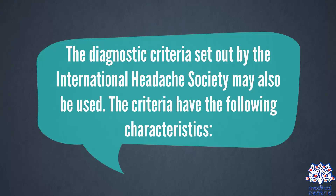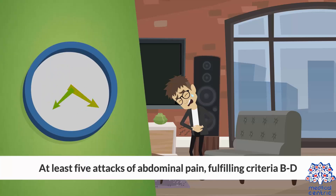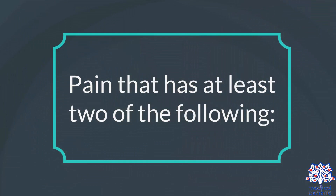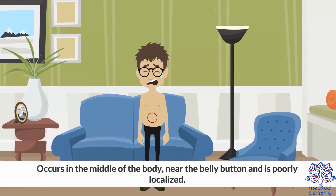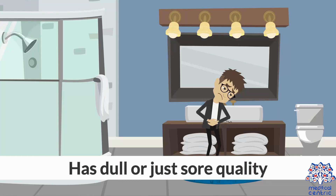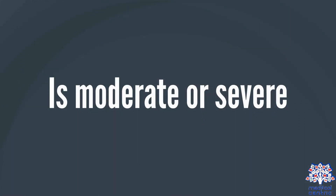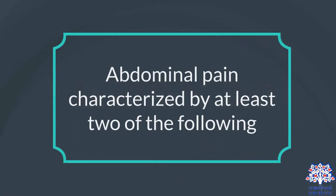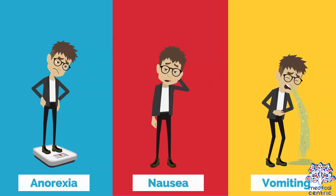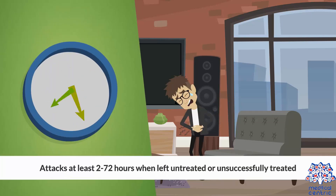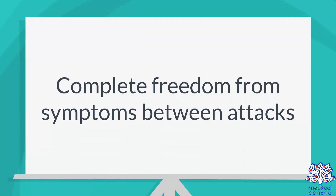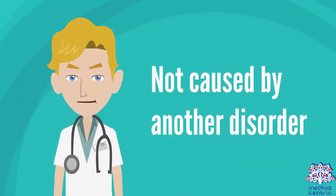The diagnostic criteria set out by the International Headache Society may also be used. The criteria include: at least 5 attacks of abdominal pain fulfilling criteria B through D; pain that occurs in the middle of the body near the belly button and is poorly localized, has dull or sore quality, and is moderate or severe; abdominal pain accompanied by at least 2 of the following: anorexia, nausea, vomiting, or pallor. Attacks last at least 2 to 72 hours when untreated, with complete freedom from symptoms between attacks, and not caused by another disorder.